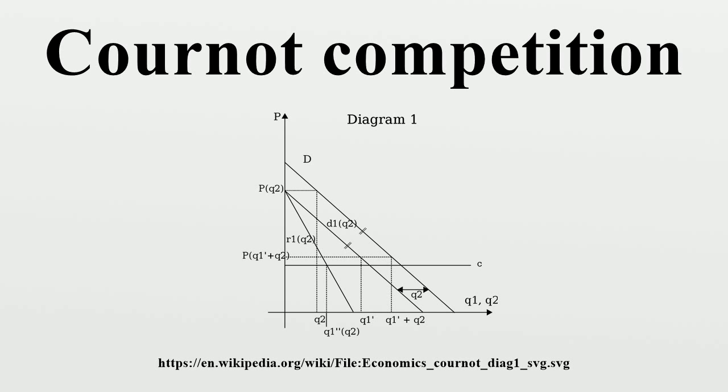To find an equilibrium, we derive firm 1's optimum for other possible values of q2. Diagram 2 considers two possible values of q2. If q2 = 0, then the first firm's residual demand is effectively the market demand. The optimal solution is for firm 1 to choose the monopoly quantity. If firm 2 were to choose the quantity corresponding to perfect competition, such that P = c, then firm 1's optimum would be to produce nil.